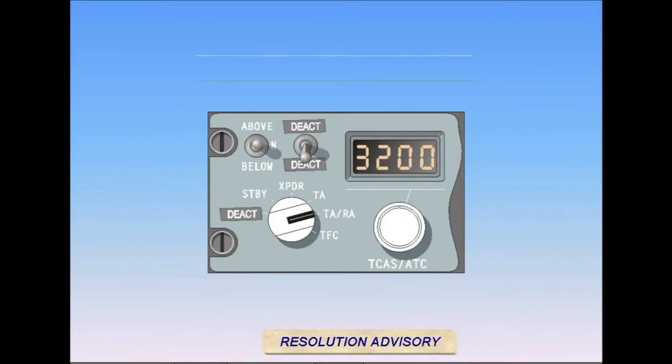The TA-RA mode allows both traffic alerts and threat resolution advisories. Non-threat traffic is displayed only when a TA or RA is present. This mode may be used to reduce screen clutter in heavy traffic areas. It has no other advantages over the TFC mode, which we'll address next.